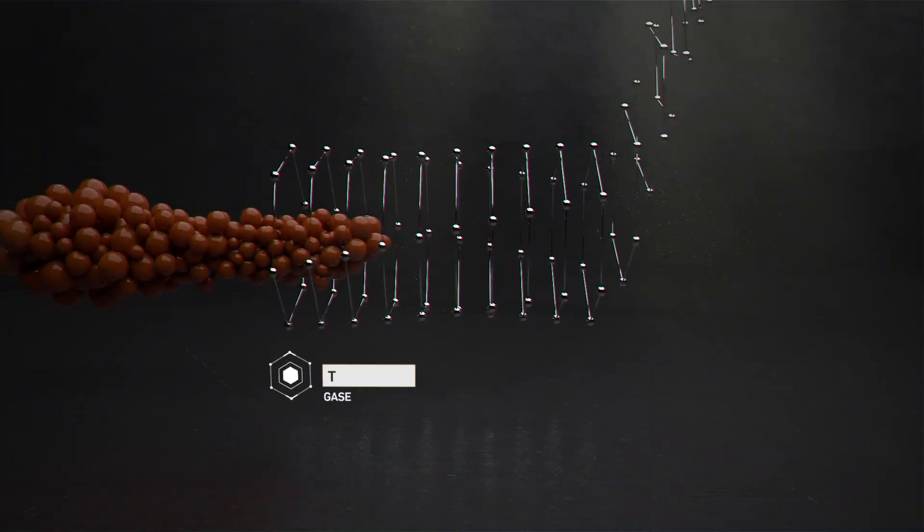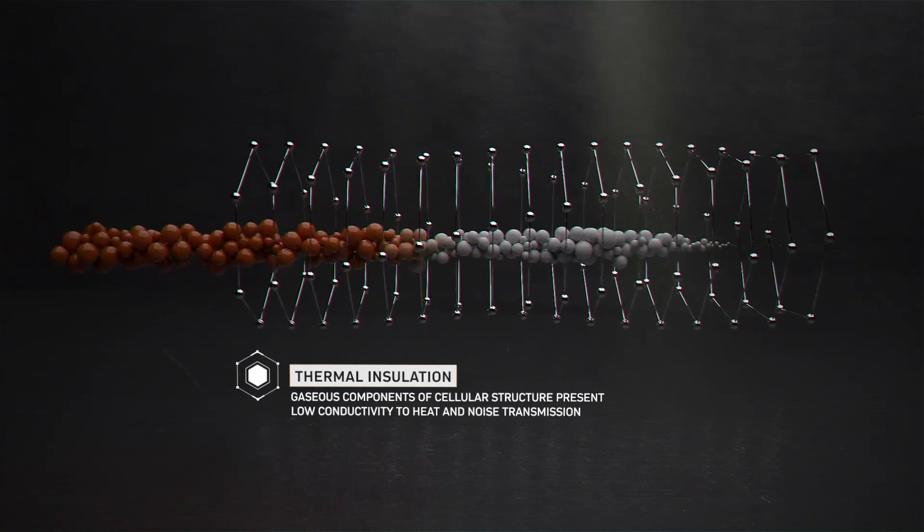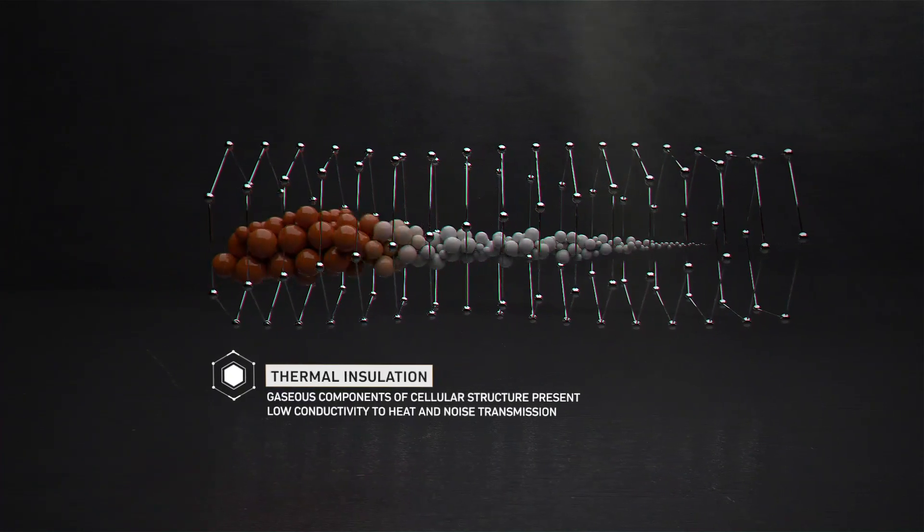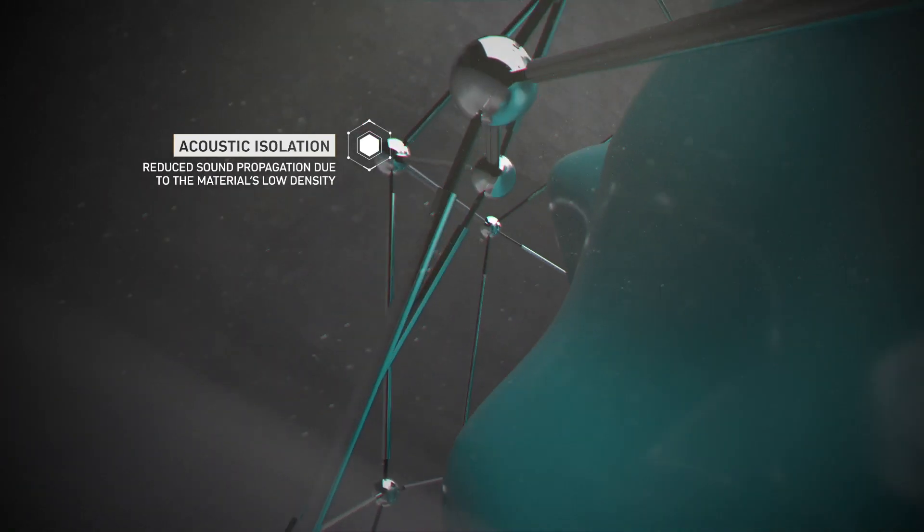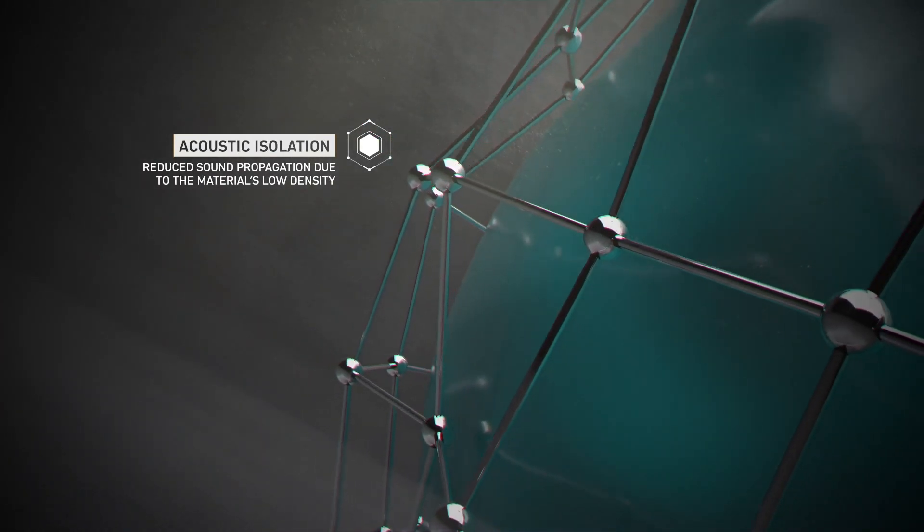Thermal insulation: gaseous components of cellular structure present low conductivity to heat and noise transmission. Acoustic isolation: reduced sound propagation due to the material's low density.